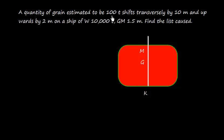A quantity of grain estimated to be 100 tonne shifts transversely by 10 meter and upward by 2 meter. The grain shifts from this position to this position in this direction. The transverse distance is 10 meter and upward distance is 2 meter.